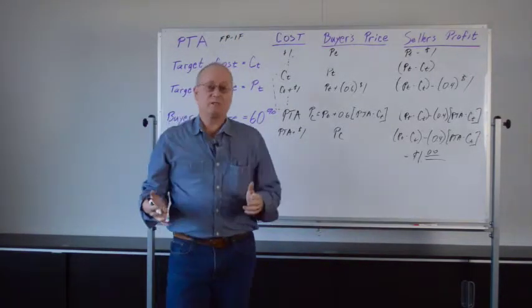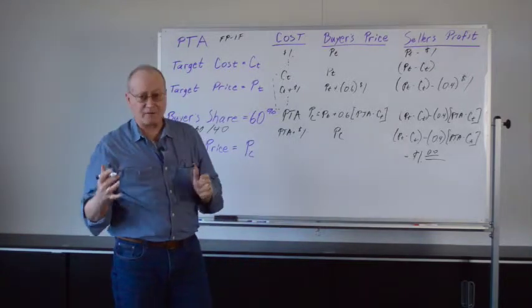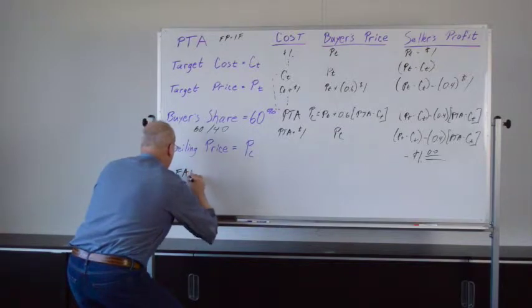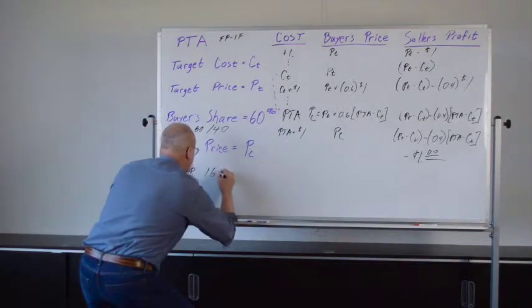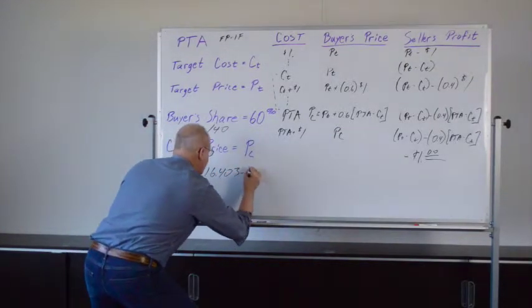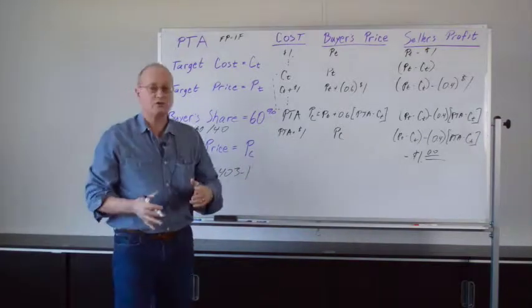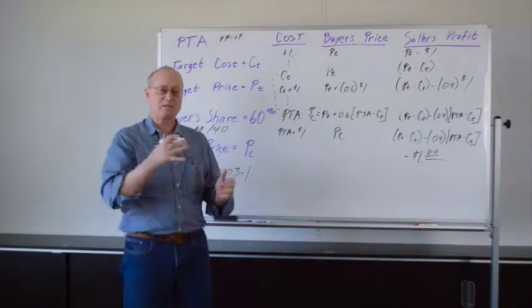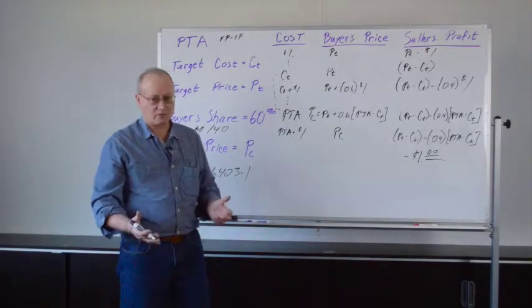And if you'd like to see that someplace else, you can look at the United States Federal Acquisition Regulation, FAR 16.403-1. And here, you'll see the exact same terminology. And they call this a fixed price incentive firm target contract.